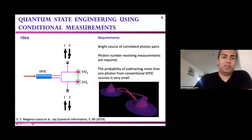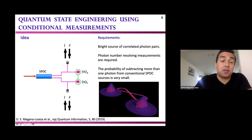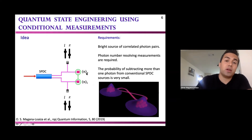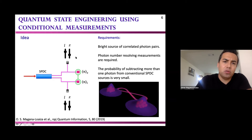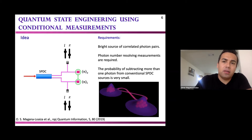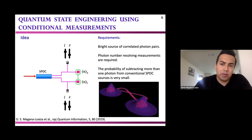This is our device: a tunable source of multiphoton states. We generate multiple photons in each of two modes, and we can control the mean photon number as well as the statistical fluctuations of each mode. To do that, we tweak two parameters: the number of photons we subtract and the brightness of the source. One requirement is a very bright source of correlated photon pairs, and then you need photon-number-resolving detection. If you can meet these requirements, you can build it in your lab.